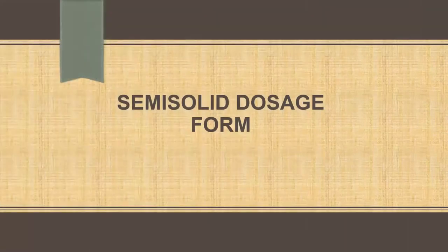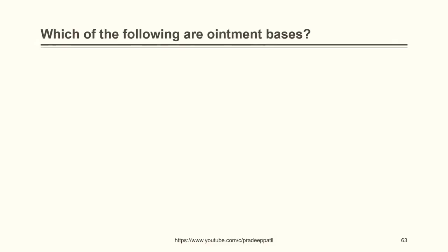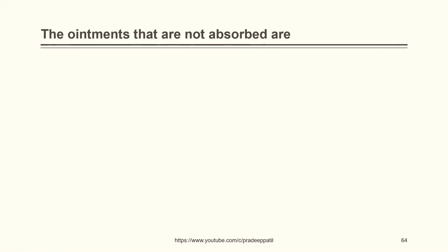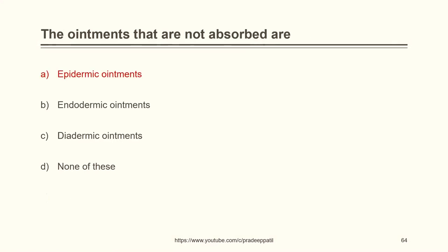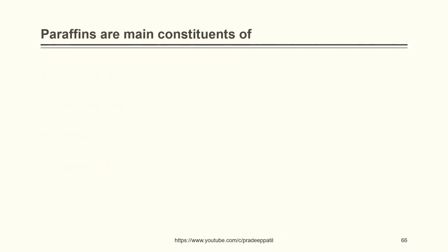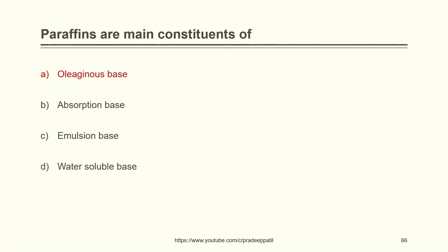Moving to the next topic — semi-solid dosage form. Ointment bases include: oleaginous base, absorption base, emulsion base, water soluble base — all of the above. Ointments that are not absorbed are epidermic ointments. Petrolatum is also termed as hydrocarbons and paraffin — both A and C. Paraffins are the main constituents of oleaginous base. The ointments that produce action on cutaneous tissue are endodermic ointments.